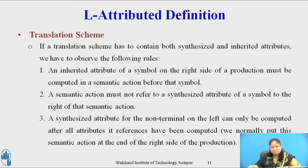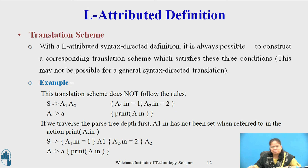If the translation scheme contains both synthesized and inherited attributes, the following rules must be observed. An inherited attribute of a symbol on the right side of a production must be computed in an action before that symbol. A semantic action must not refer to the synthesized attribute of a symbol to the right of that semantic action. A synthesized attribute for a non-terminal on the left can only be computed after all the attributes it references have been computed, so this semantic action is normally placed at the end of the right side of the production. With an L-Attributed syntax-directed definition, it is always possible to construct a corresponding translation scheme satisfying these three conditions, which may not be possible for a general syntax-directed translation.